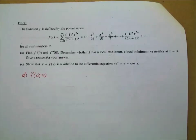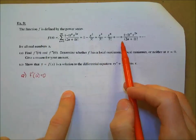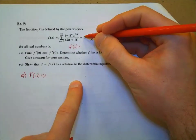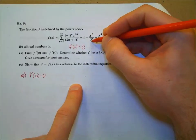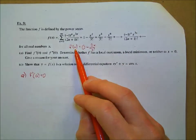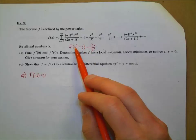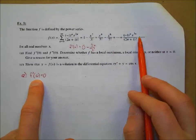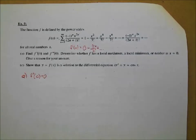F prime of zero is zero. Here's why: F prime of x — the derivative of the constant term is zero, then the derivative of minus x squared over three factorial is minus two x over three factorial. Every other term will still have an x in it. Since we're finding F prime of zero, any term with an x becomes zero. So F prime of zero is indeed zero.